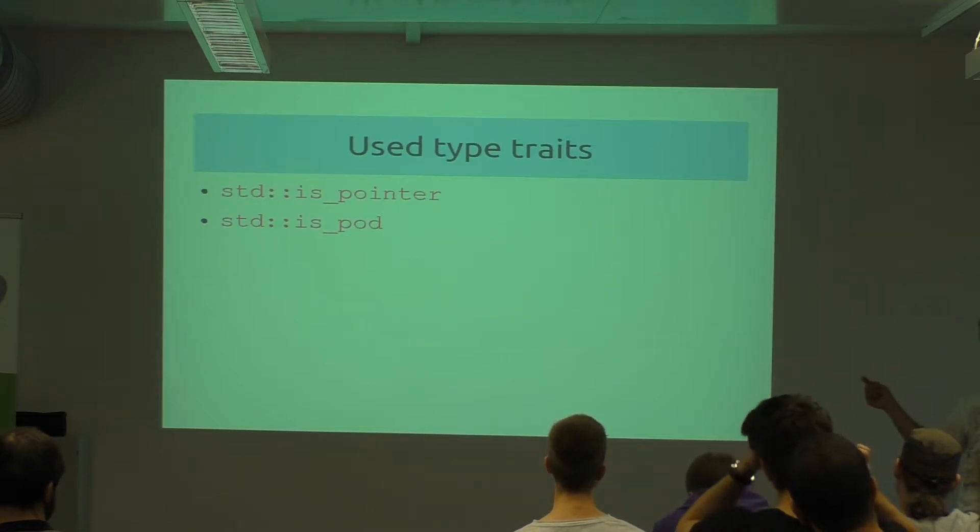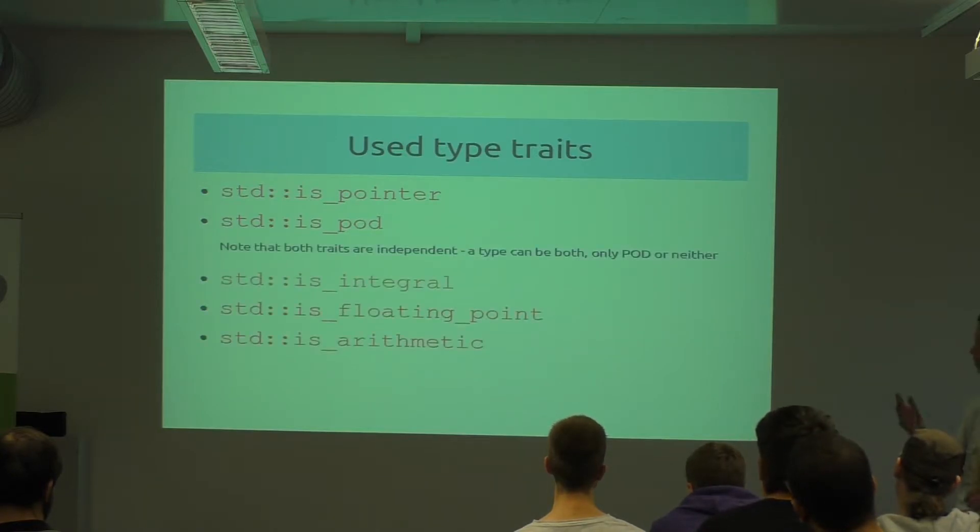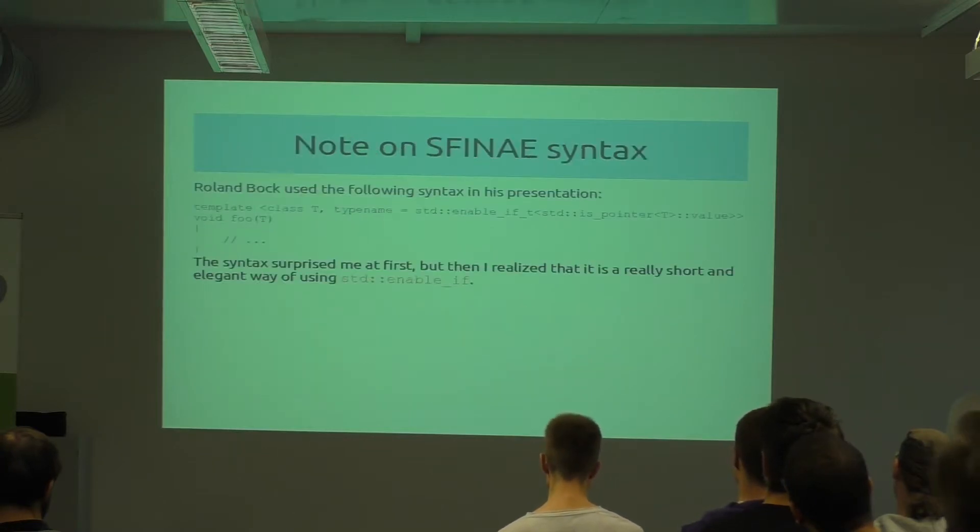There's another set of type traits: is_integral, is_floating_point, and is_arithmetic. is_arithmetic is the union of the other two. So if we negate it, these three are disjoint, and we want to make use of that, of course.